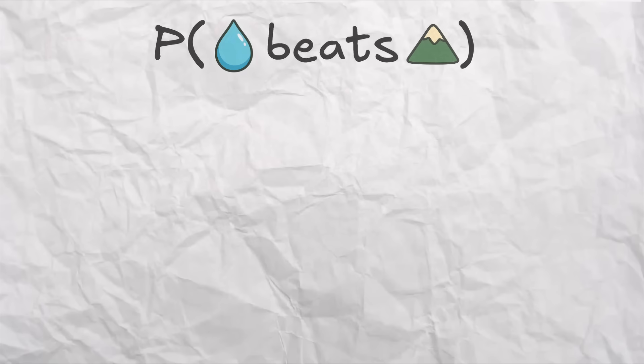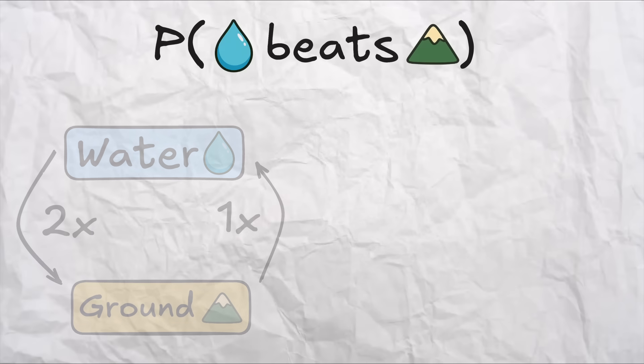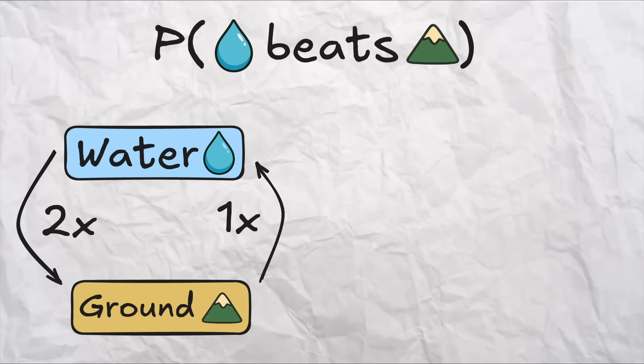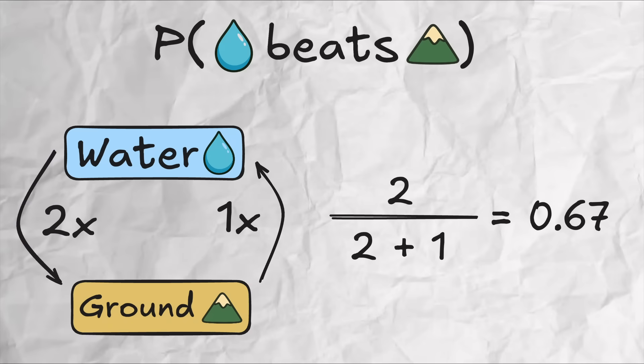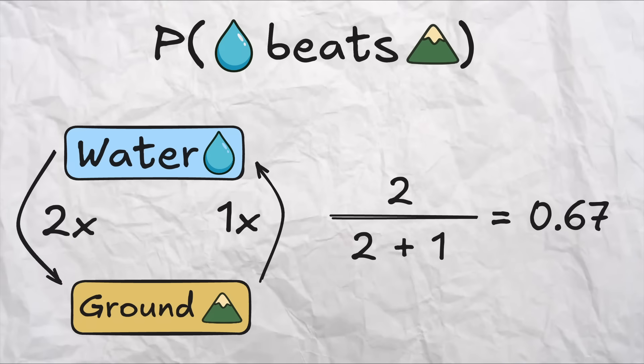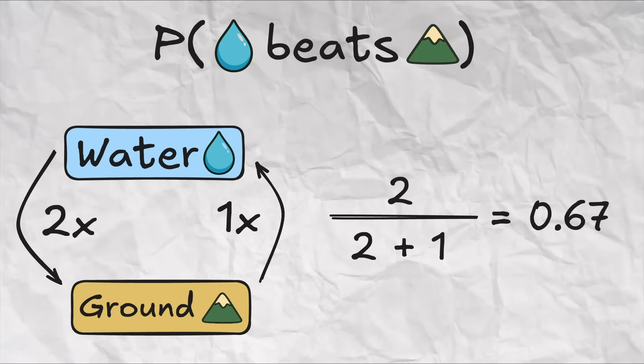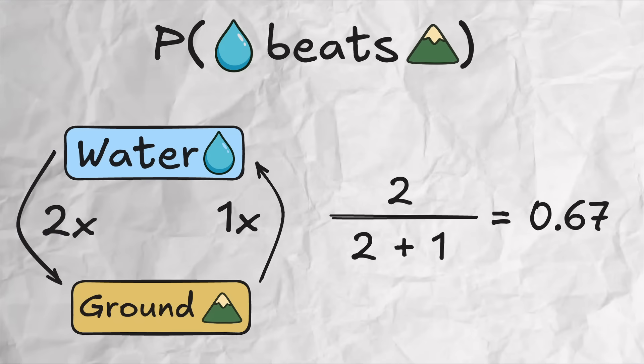Now consider trying to work this out for water and ground. Water is again super effective against ground, but crucially does not resist ground. So we calculate probability water beats ground as two divided by the sum of two and one, which is only 0.67. Definitely lower than the 0.8 we calculated before.